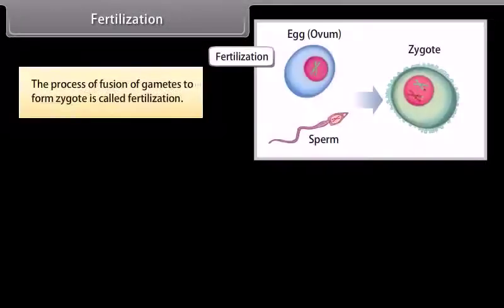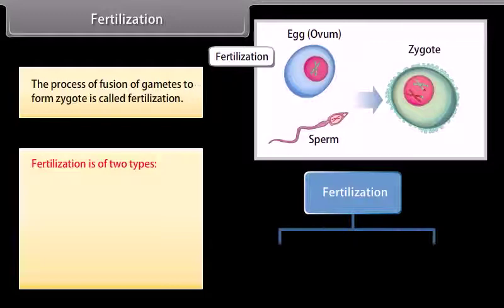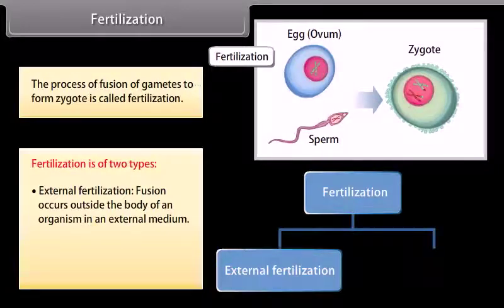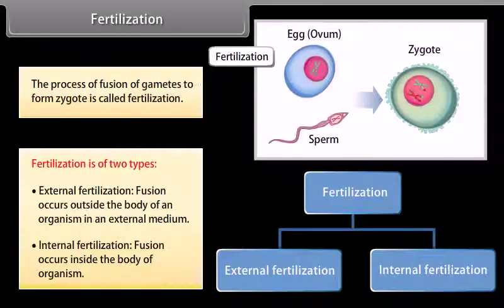The process of fusion of gametes to form a zygote is called fertilization. Fertilization is of two types: external fertilization, where fusion occurs outside the body of an organism in an external medium, and internal fertilization, where fusion occurs inside the body of the organism.